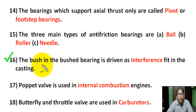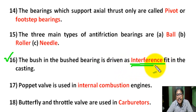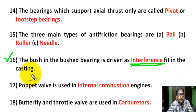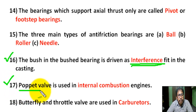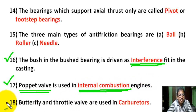Question number 16: The bush in the bush bearing is given as an interference fit in the casting. Question number 17: Poppet valve is used in internal combustion engines.